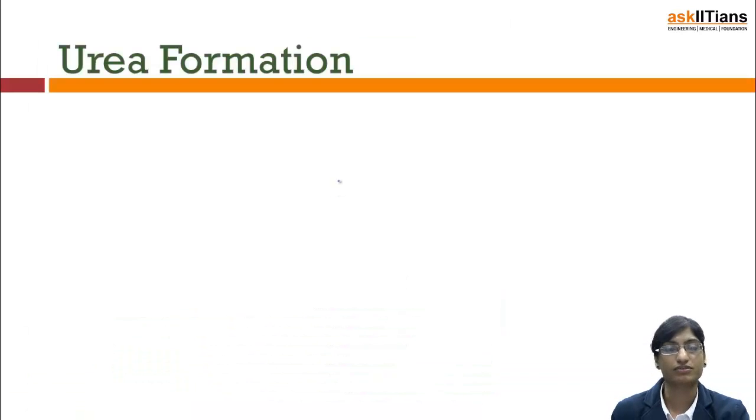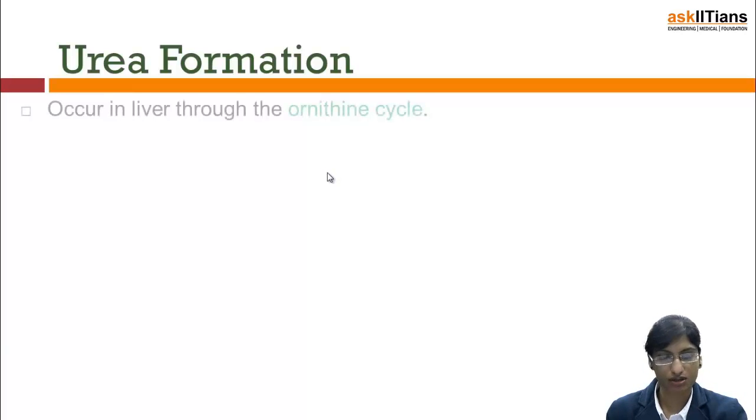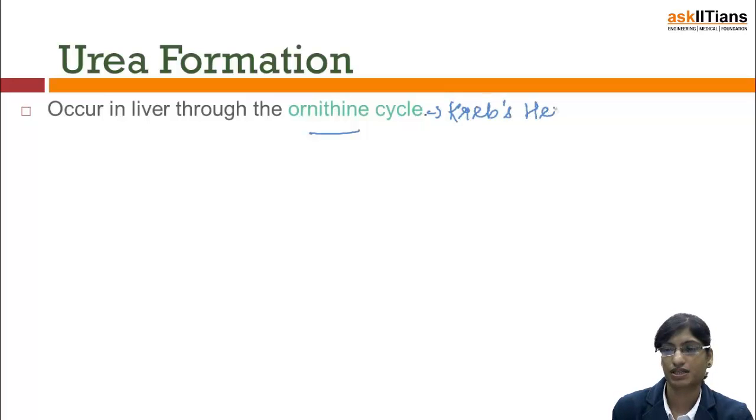So first thing, urea formation. Urea formation occurs in liver and it occurs by urea cycle. Urea cycle also known as ornithine cycle and also known as Krebs-Henseleit cycle.